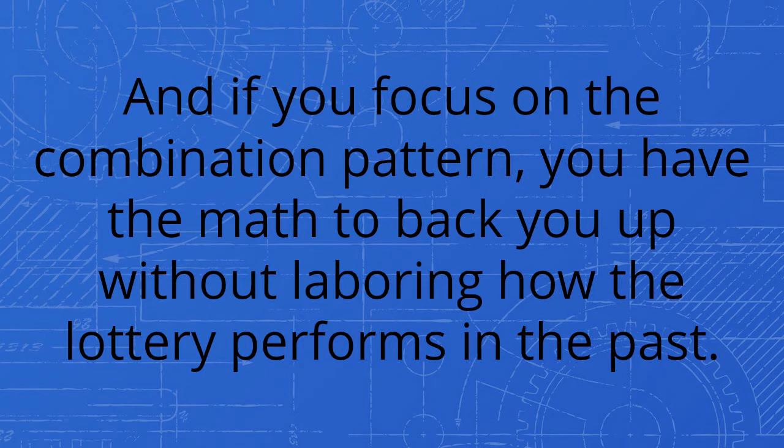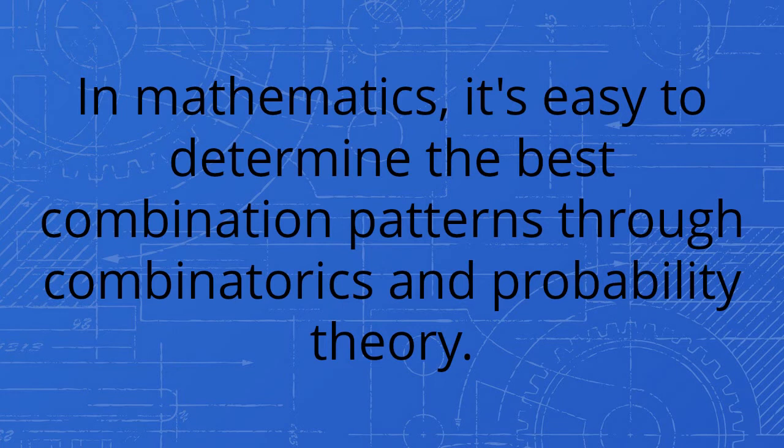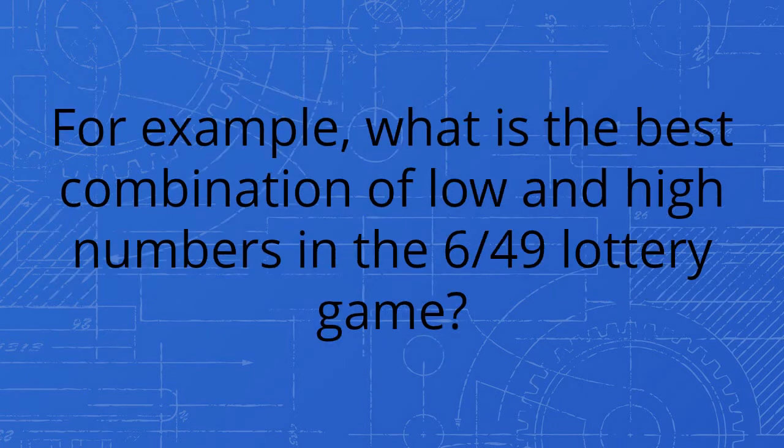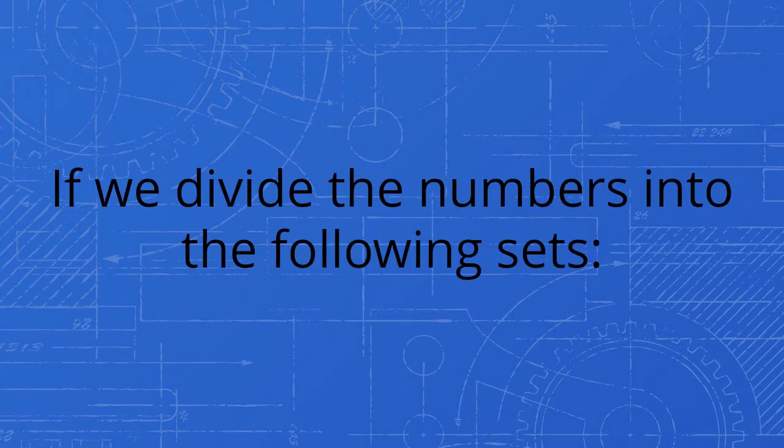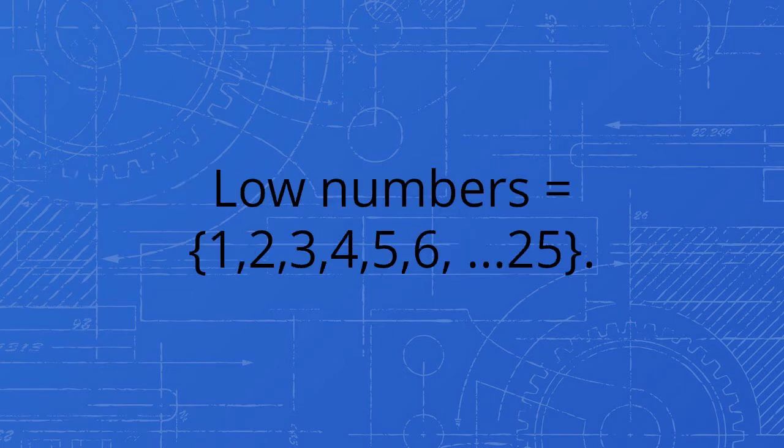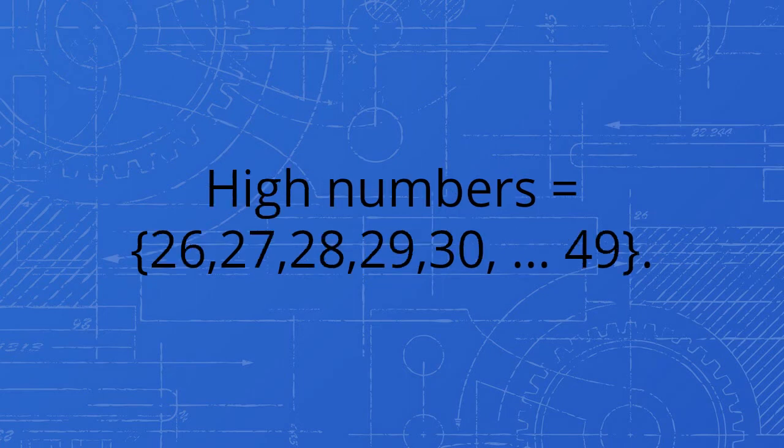And if you focus on the combination pattern, you have the math to back you up without laboring how the lottery performs in the past. In mathematics, it's easy to determine the best combination patterns through combinatorics and probability theory. For example, what is the best combination of low and high numbers in the 6/49 lottery game? If we divide the numbers into the following sets: low numbers equals 1, 2, 3, 4, 5, 6 up to 25, high numbers equals 26, 27, 28, 29, 30 up to 49.